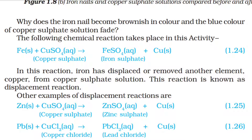Fe (solid) + CuSO₄ (aqueous) → FeSO₄ (aqueous) + Cu (solid). In this reaction, iron has displaced or removed another element, copper, from copper sulfate solution. This reaction is known as a displacement reaction.